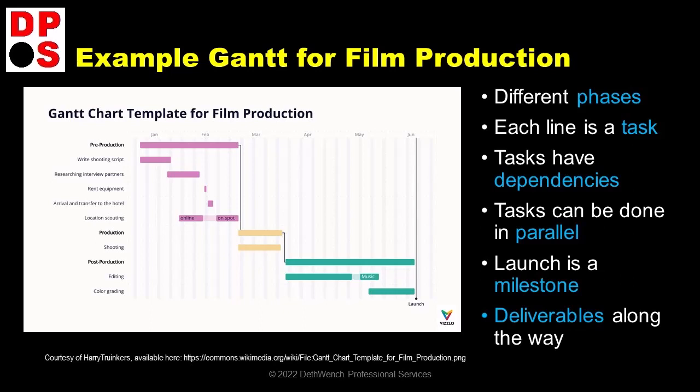In this example Gantt I found on the internet, there isn't much of a demonstration of deliverables or milestones. You will see an important milestone at the end where it says launch. But along the way, you would see deliverables typically — usually they are marked with a big star or asterisk. If you look at the second green line under the post-production phase, you will see the word music at the end. Perhaps that is how they are indicating that this is the due date for the music deliverable.